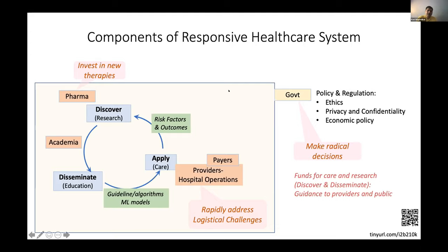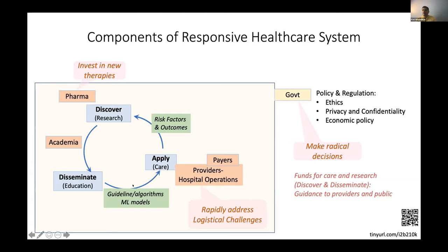The government stages all of this through policies on ethics, privacy, confidentiality, and economic policy. In COVID, providers had to rapidly act on logistical challenges, pharma had to make investments, and the government had to make radical decisions — all of which require evidence. The government had to fund care and therapies, and provide guidance to providers and the public.